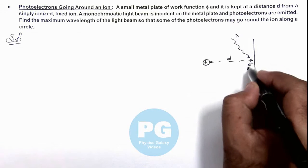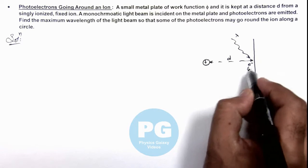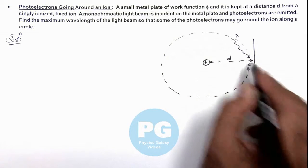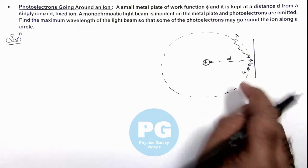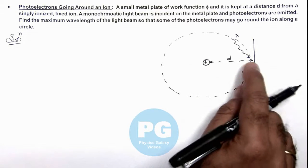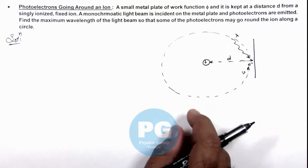For these electrons which are emitted to move around this ion in a circular path, these must have a speed such that the attractive force by the ion on electron will provide the necessary centripetal force for its circular motion.